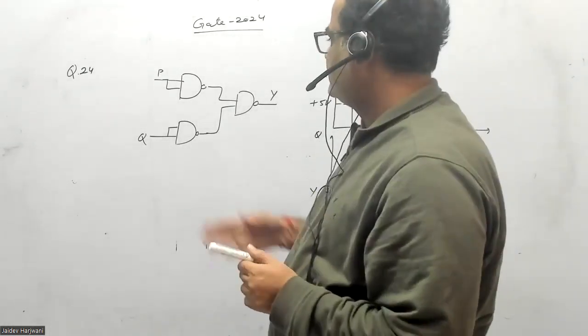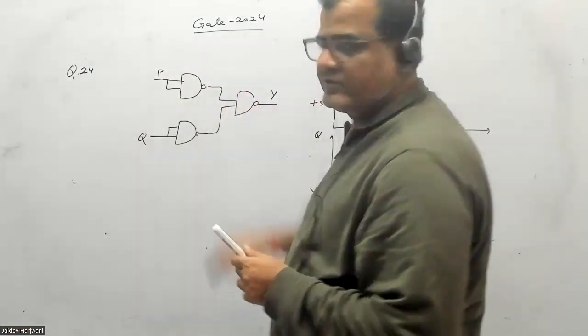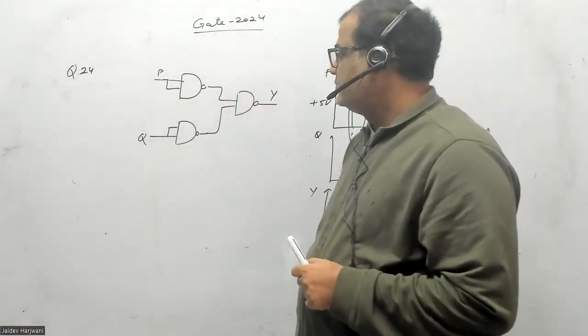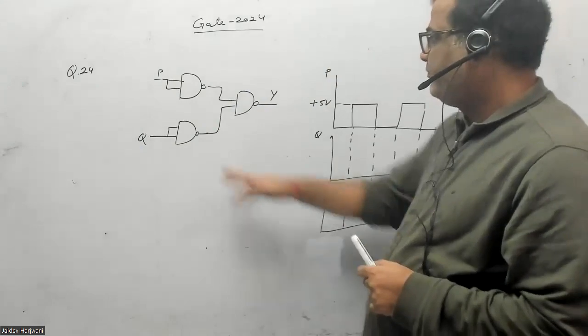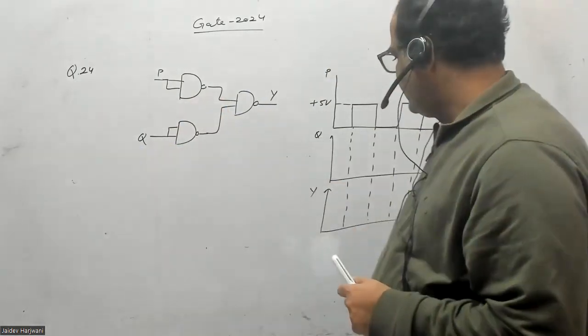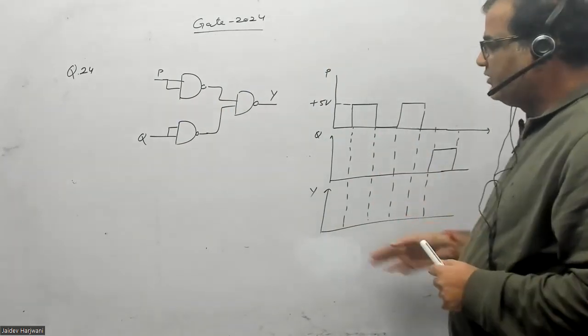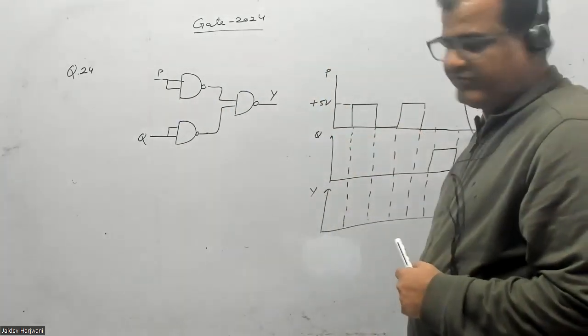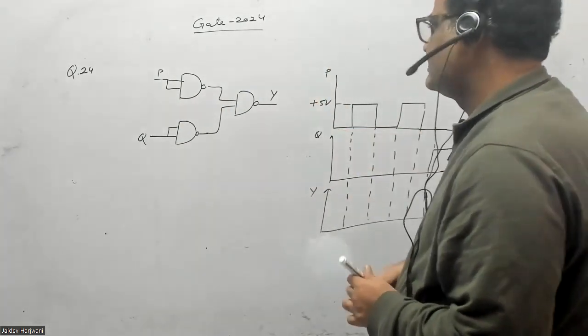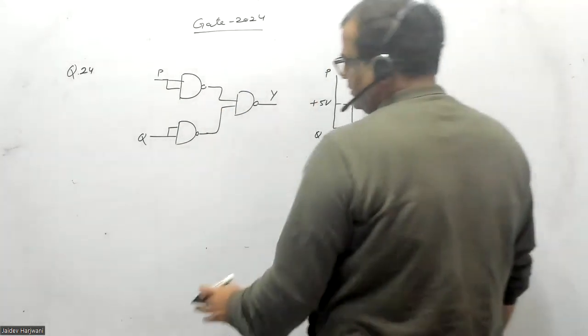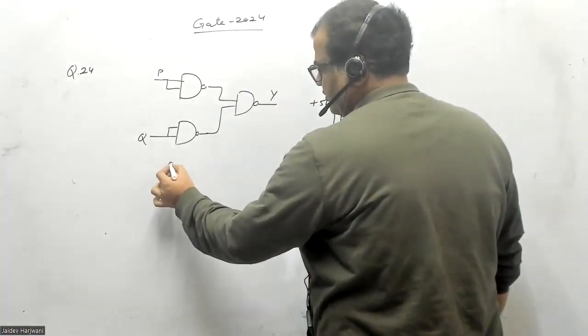Hello students, let us solve one more problem from Gate 2024. They have given you the P and Q input signals, and the waveform for input signals are given like this. They are asking what will be the waveform for the output of this digital circuit.